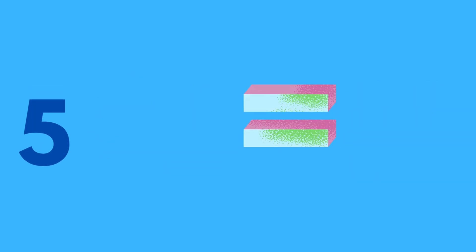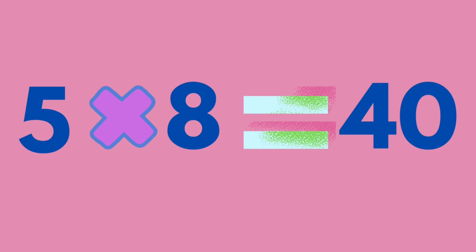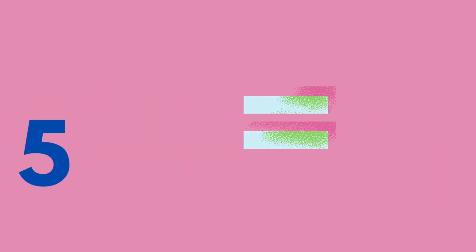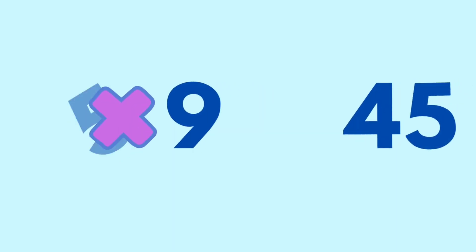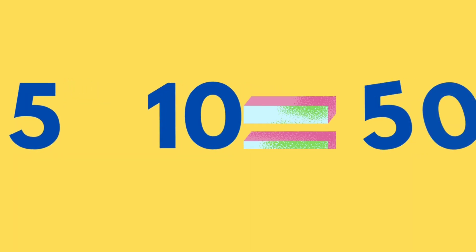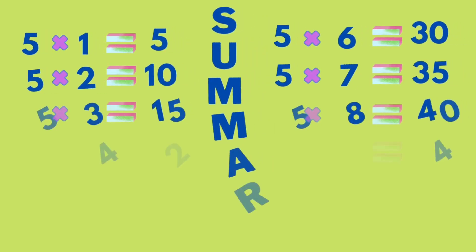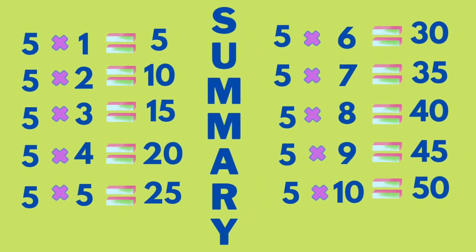5 times 7 is equal to 35. 5 times 8 is equal to 40. 5 times 9 is equal to 45. 5 times 10 is equal to 50. Let's see the summary table of 5.